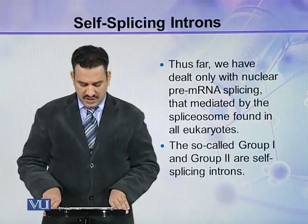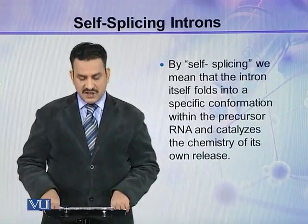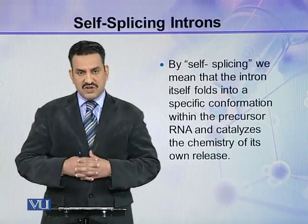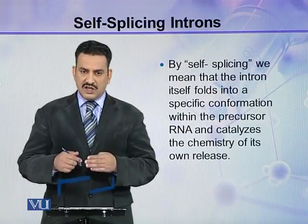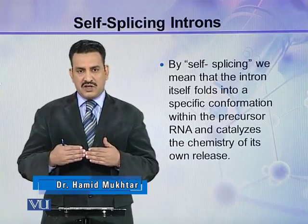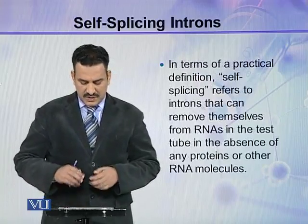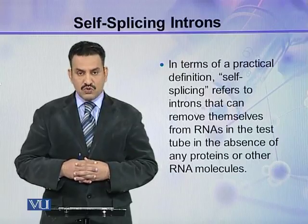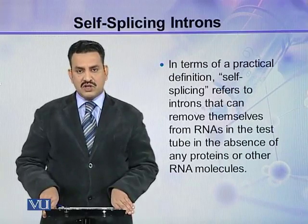The so-called group 1 and group 2 are self-splicing introns. By self-splicing, we mean that the intron itself folds into a specific conformation within the precursor RNA and catalyzes the chemistry of its own release — the RNA intron releases itself from the mRNA. No external spliceosome or external proteins are required. In practical terms, self-splicing refers to introns that can remove themselves from RNAs in a test tube in the absence of any proteins or other RNA molecules.